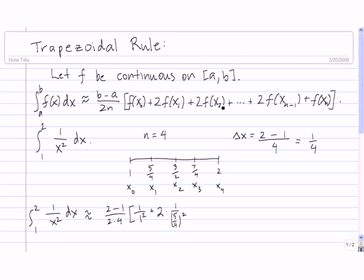And then we continue on, so 2 f of x sub 2. f of x sub 2 is, we use 3 halves, so it's 1 over 3 halves squared. Plus 2 f of x sub 3, so we put a 2 in front for everything except for our starting value and our ending value. So plus we have 7 fourths, so 2 times 1 over 7 fourths, plug it into the function.